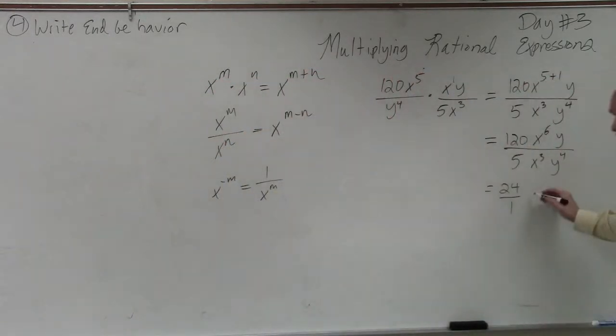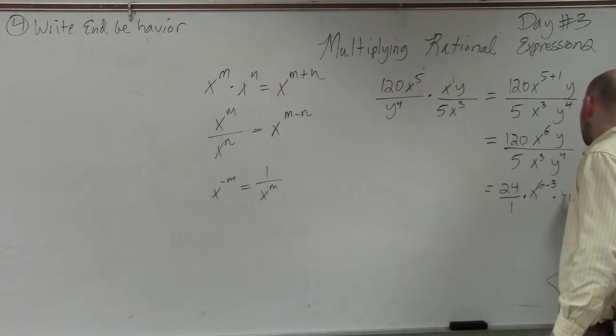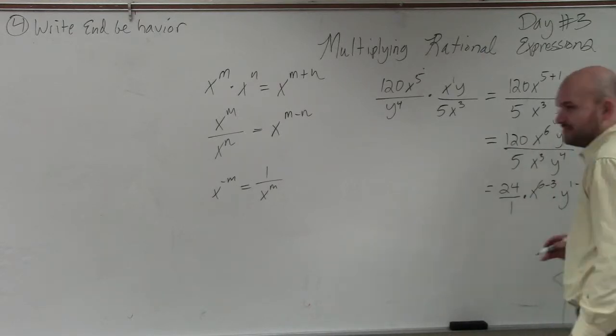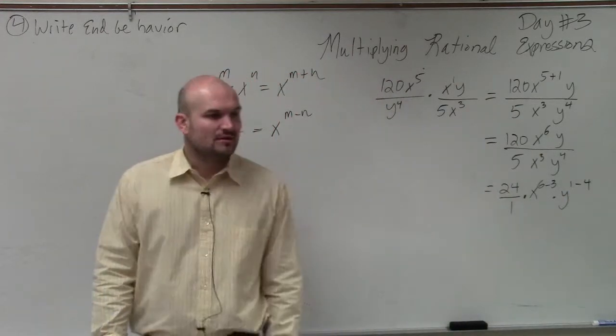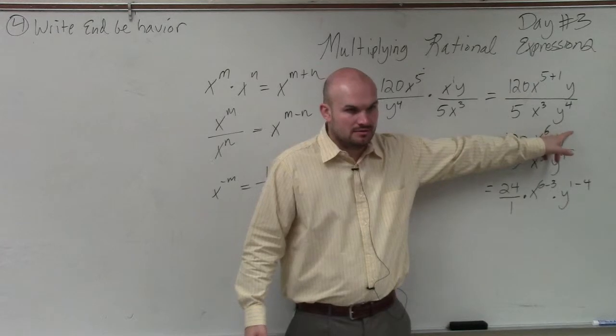Because now I do these, and so I have x to the sixth minus 3 times y to the 1 minus 4. Does everybody see why it's 1 minus 4? Remember, y, by itself, is always really y to the first power, OK?